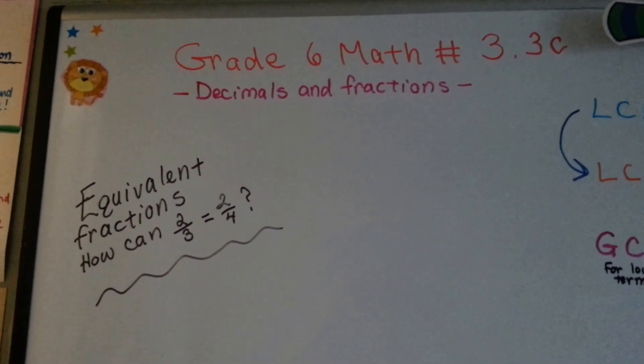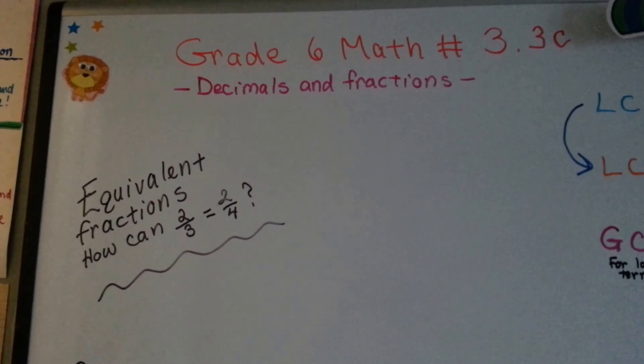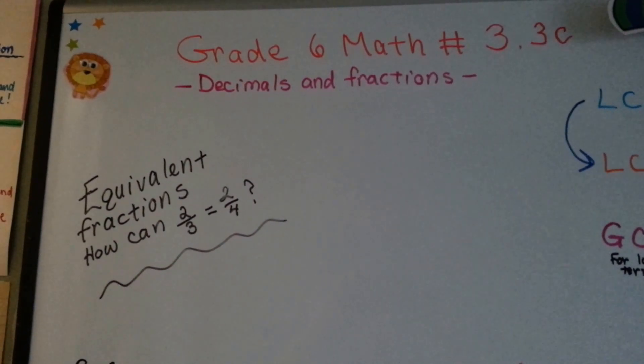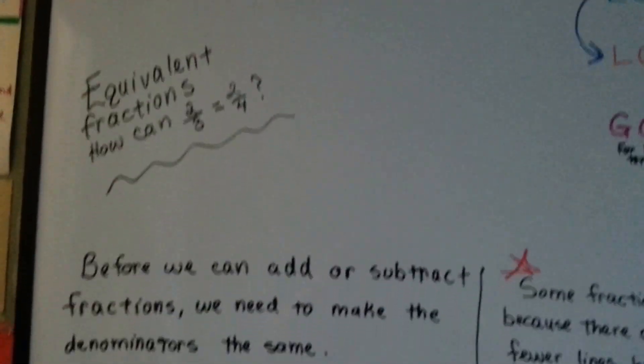Grade 6 math number 3.3c, equivalent fractions. How can two-thirds equal two-fourths? I'm going to show you. Isn't that curious?